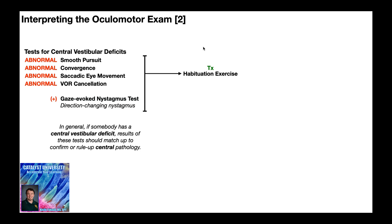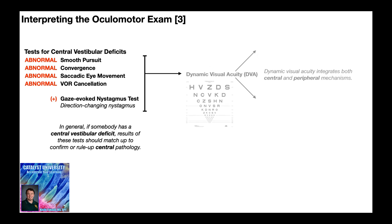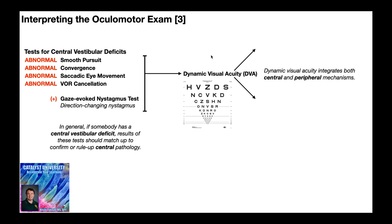So how do you know if somebody has impaired gaze stabilization? You're going to give what's called the dynamic visual acuity test, or the DVA, and it uses an eye chart like this — we covered this in a separate video. Recall that dynamic visual acuity integrates both central and peripheral mechanisms, so depending on the result, it will indicate if somebody has impaired gaze stabilization. If DVA is normal — a two-line difference or less — the person likely does not have impaired gaze stabilization, but they still require habituation exercises due to having a central vestibular deficit.